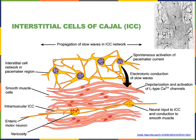As that action potential spreads through the smooth muscle fibers, it will trigger opening of calcium channels known as L-type calcium channels. L-type calcium channels are voltage-gated calcium channels that stay open for a long time after activation by the action potential — approximately 100 to 200 milliseconds — allowing calcium to rush into the smooth muscle fibers. Calcium then binds to calmodulin, stimulating myosin light chain kinase to phosphorylate myosin light chain, activating the contraction mechanism.